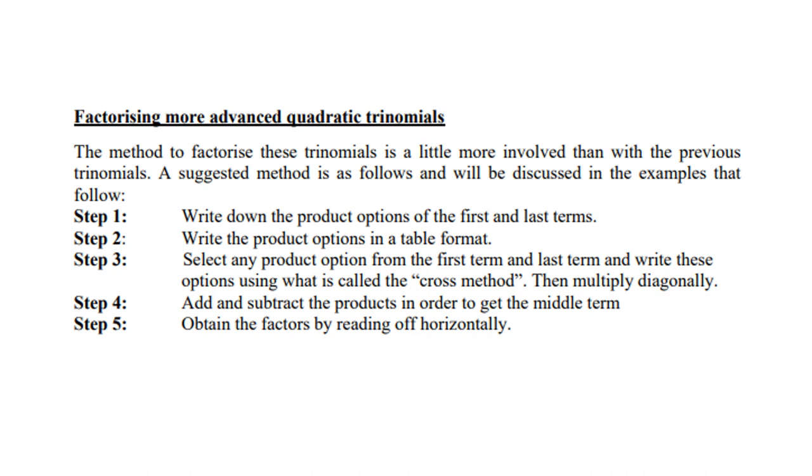Step 1: Write down the product options of the first and last terms. Step 2: Write the product options in a table format. Step 3: Select any product option from the first and last term, and write these options using what is called the cross method, then multiply diagonally. Step 4: Add and subtract the products in order to get the middle term. Step 5: Obtain the factors by reading off horizontally.